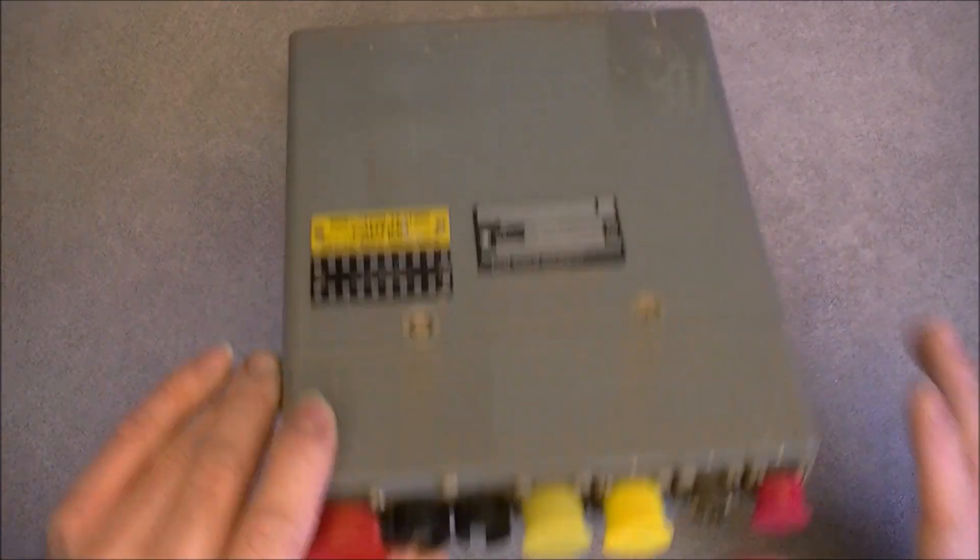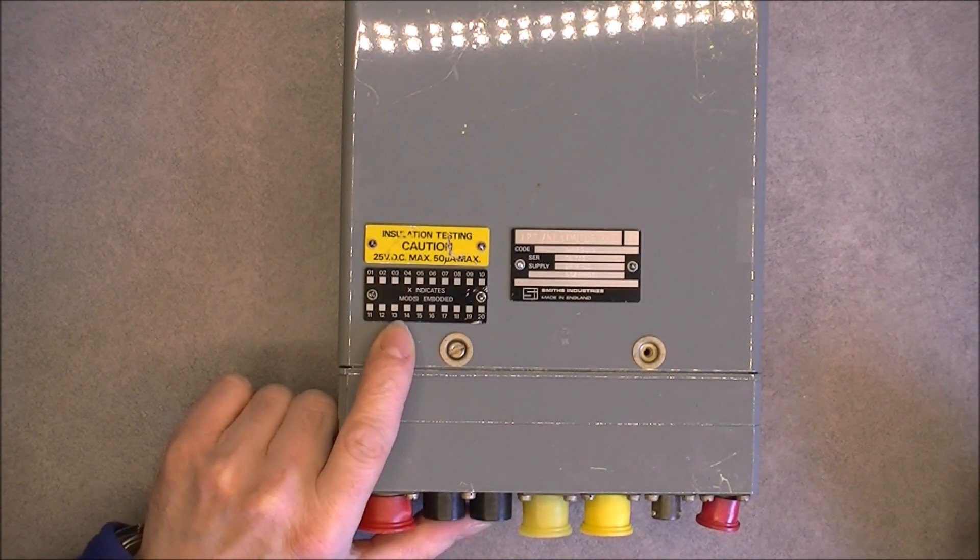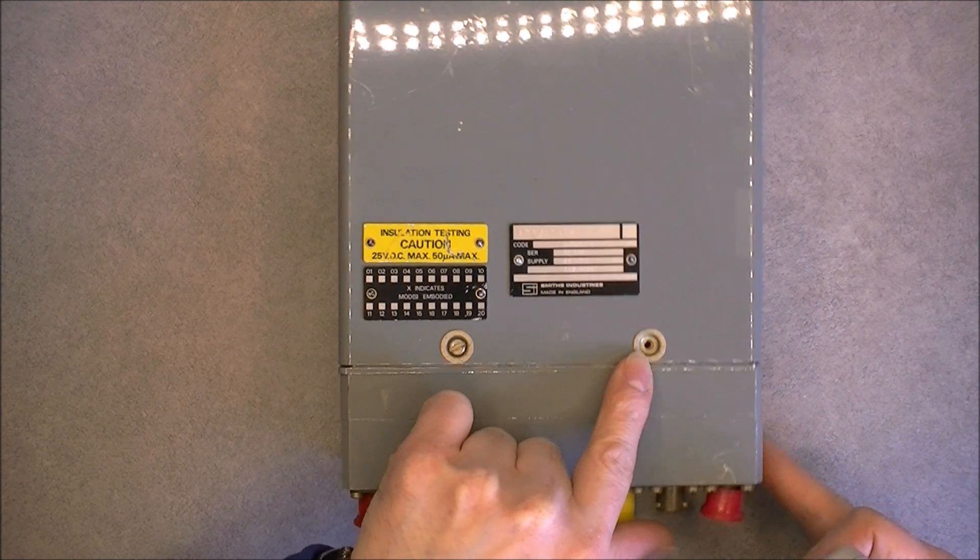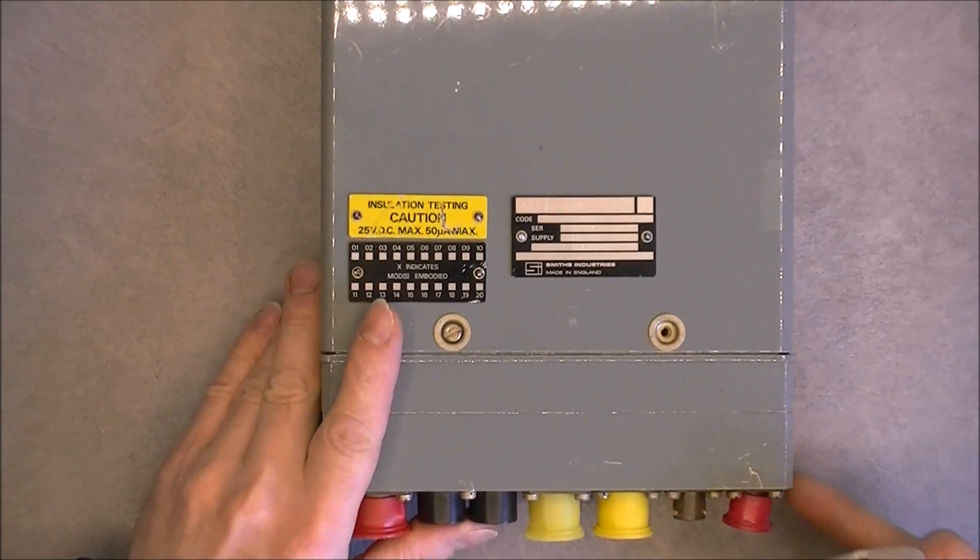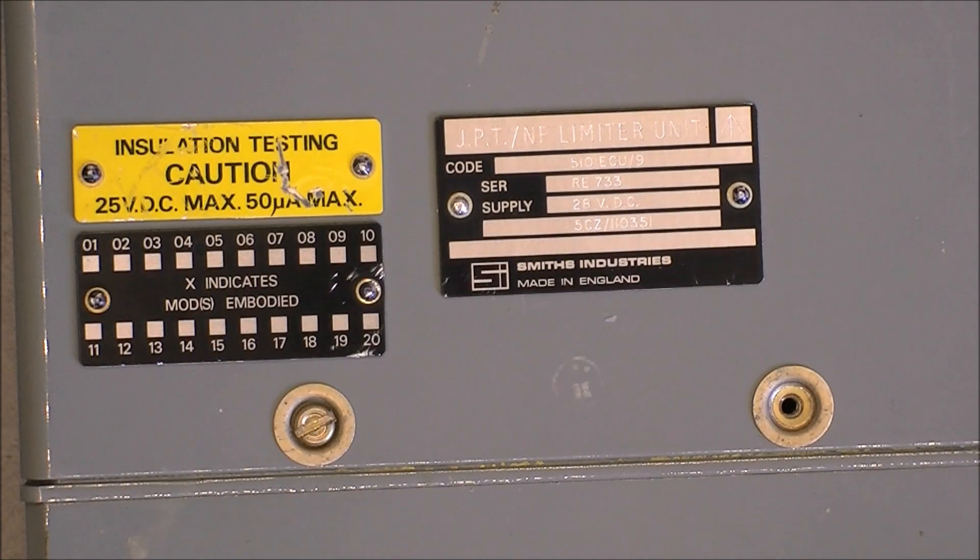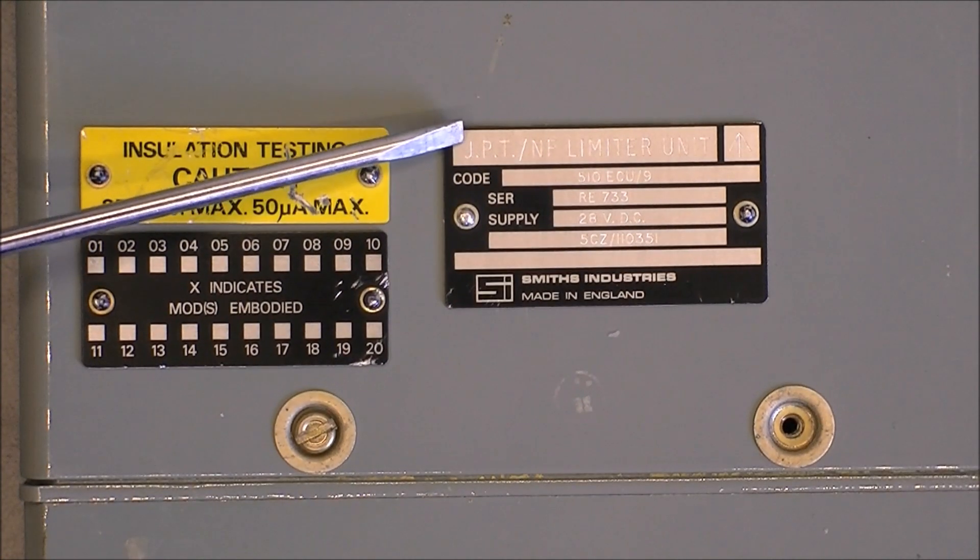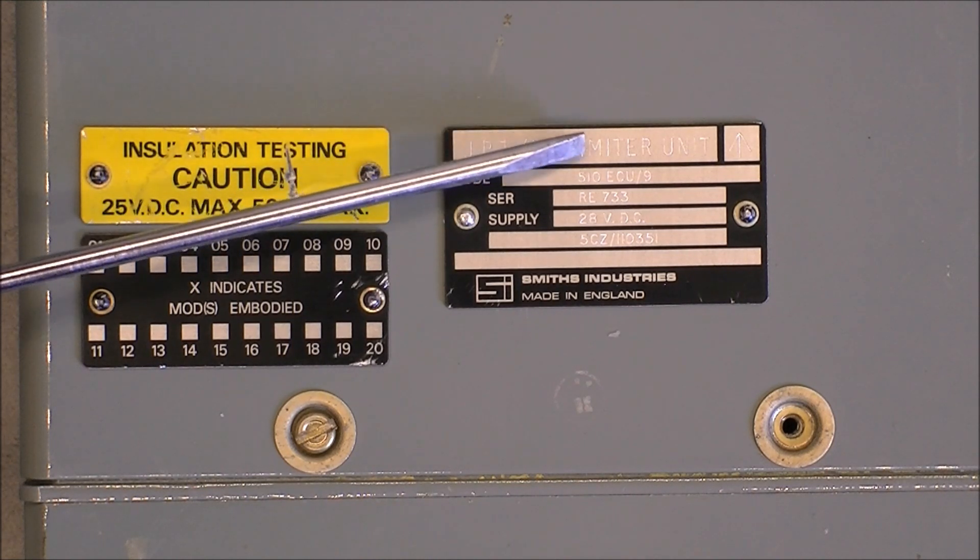So it is a grey box, as you can see. First we will have a look at the labels. Don't mind the missing screws, I did already prepare the teardown. So it is made by Smith Industries in England and it is called a GPT Limiter unit.